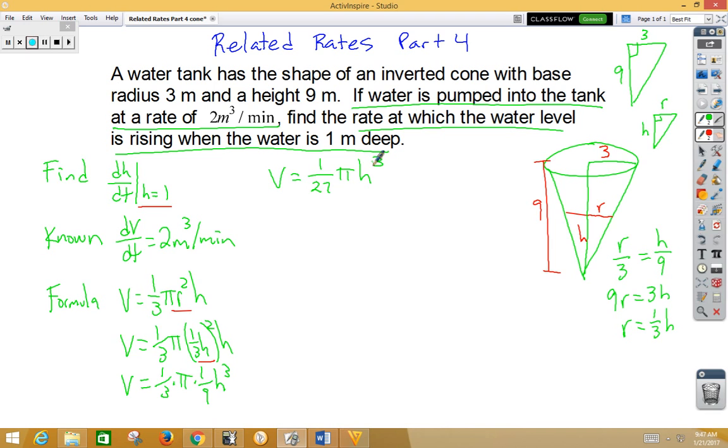So, now let's take the derivative. We have dV/dt is equal to 3/27 πh² dh/dt. Now that we've got our derivative, we can start plugging in. Well, we know that dV/dt is 2. We know that 3/27 can reduce to 1/9 π. We know our h is 1, and we're trying to find dh/dt.